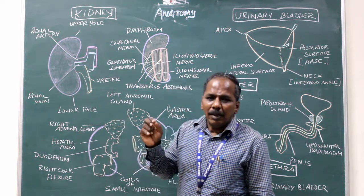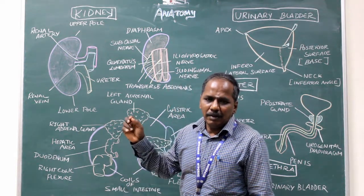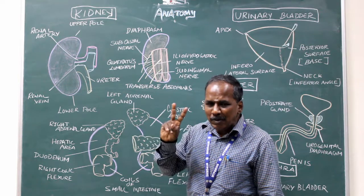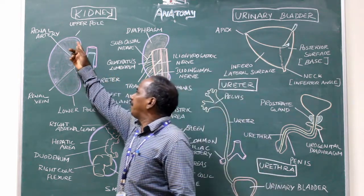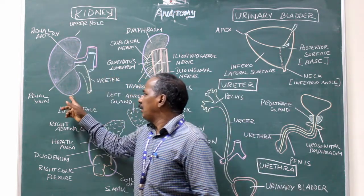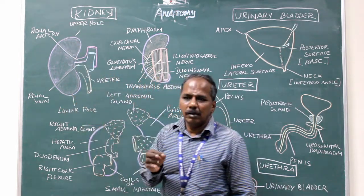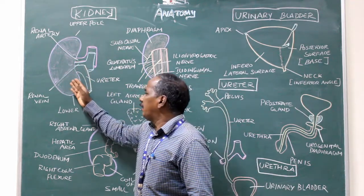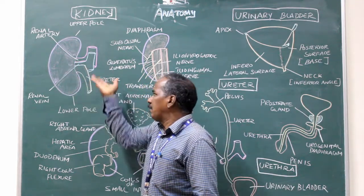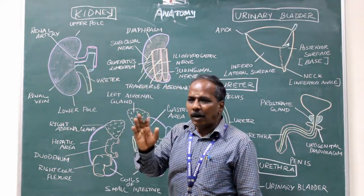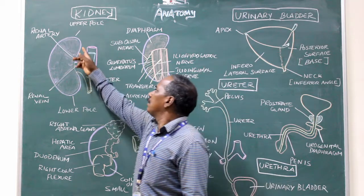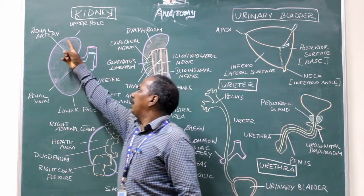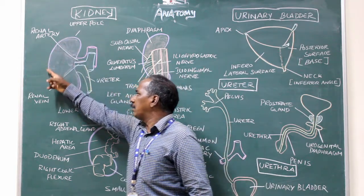It is a bean-shaped organ and has two poles: upper pole and lower pole. Two surfaces: anterior surface and posterior surface. Two borders: medial border and lateral border.